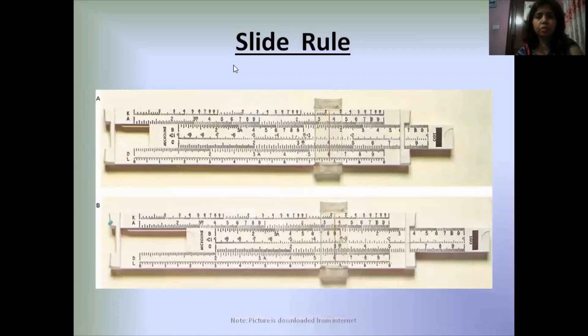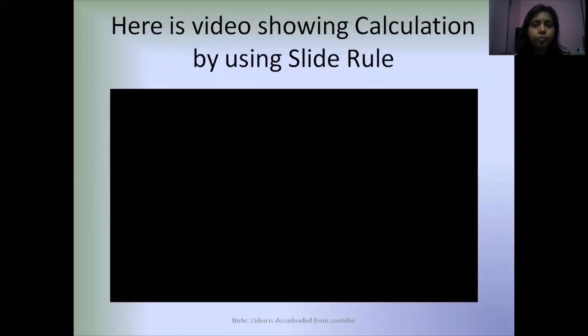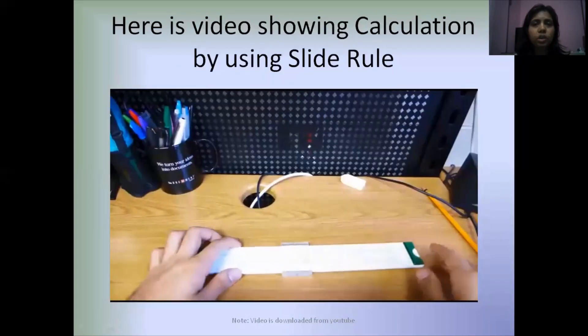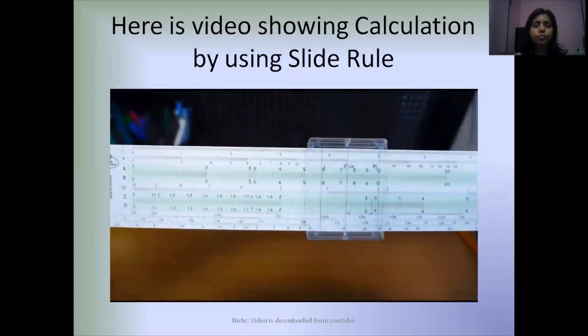Now we are going to start with the slide rule. Here is a picture of a slide rule. The slide rule was invented by William Oughtred in 1620. He was an English mathematician who used the system of logarithms developed by John Napier. Here is a video showing calculation using the basic operation of a slide rule.